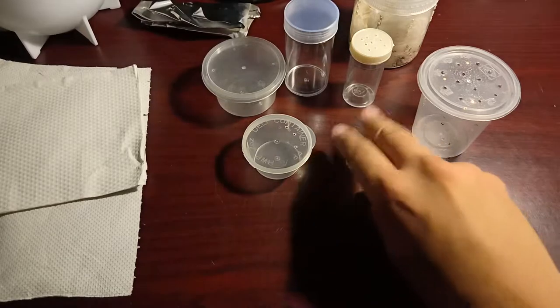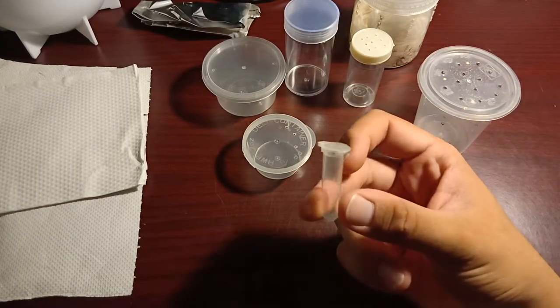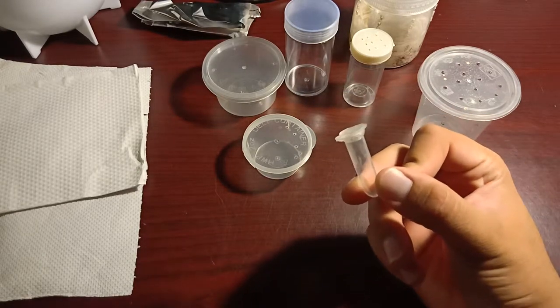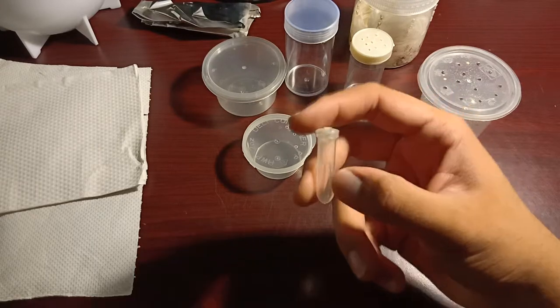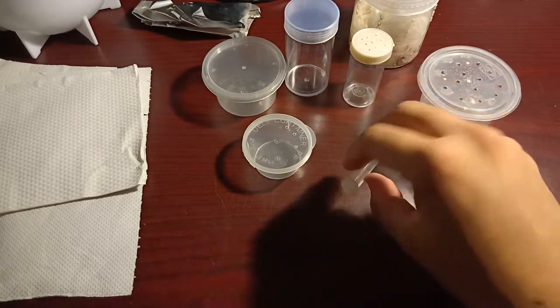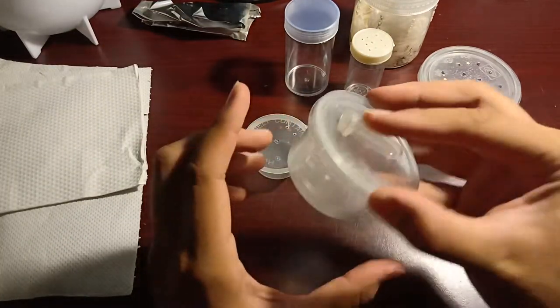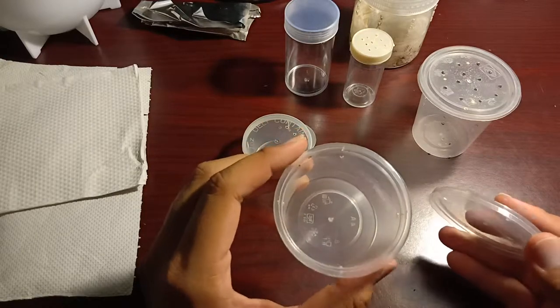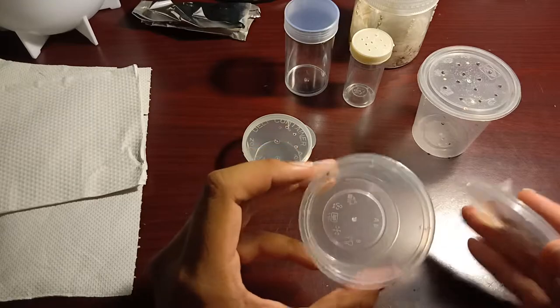So normally for slings what I'll be using are these little specimen pill jars. These hold around 0.5 to 1.5 cm slings. This is what I normally put the pill jars in. These deli cups can also be used for 1 inch slings on, 1 inch juveniles onwards.